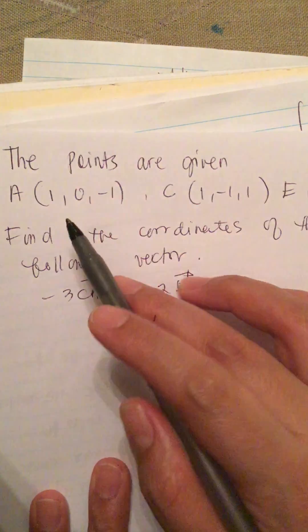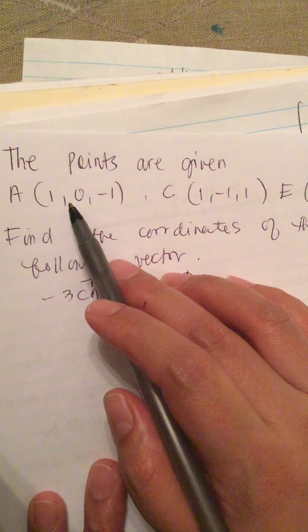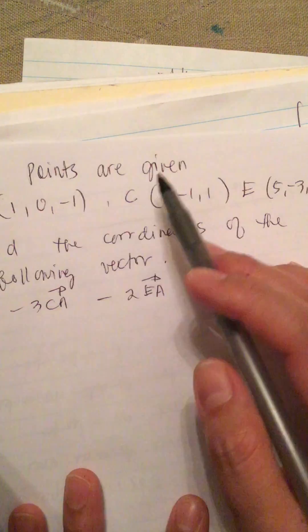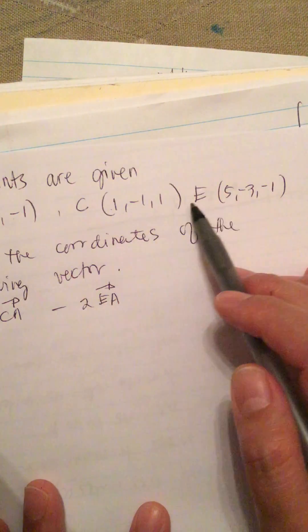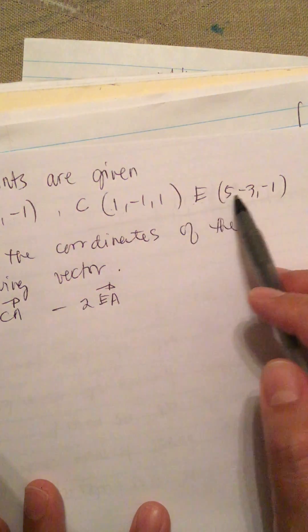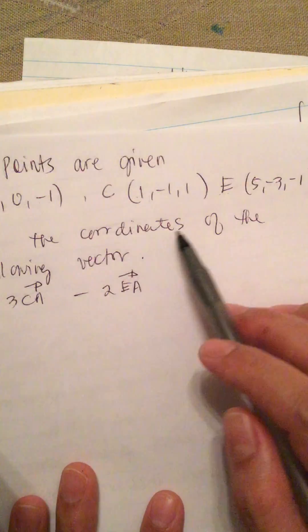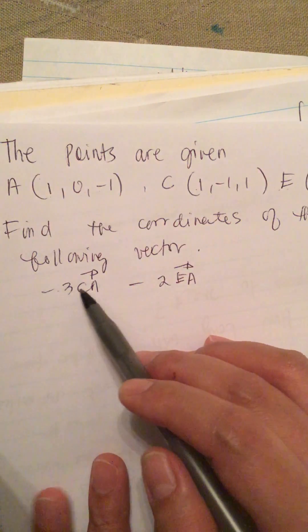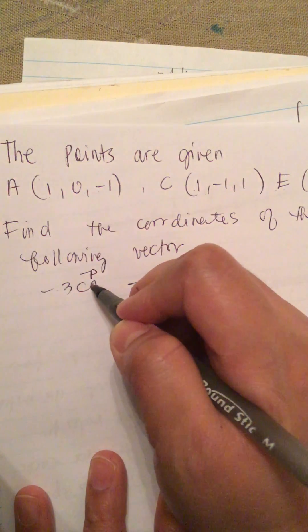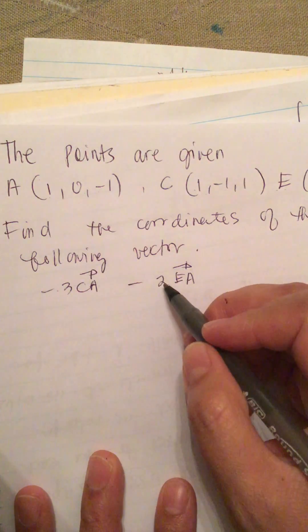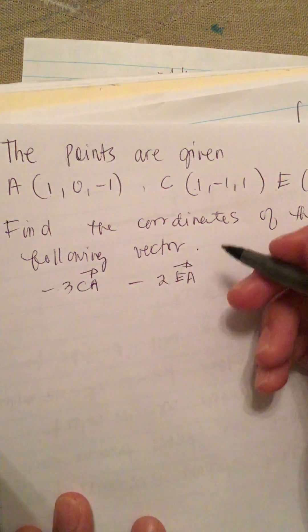The points are given: A(1, 0, -1), C(1, -1, 1), and E(5, -3, -1). Find the coordinates of the following vector: -3 vector CA minus 2 vector EA.